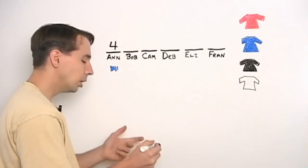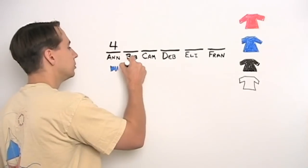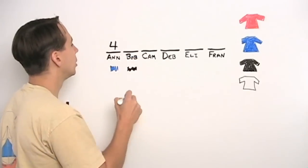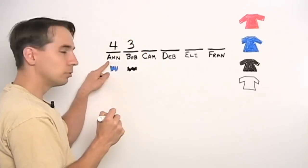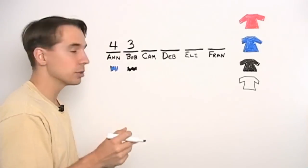So he gets to choose next. Say Bob chooses black. And he had three choices. So for each of Ann's four choices, Bob will have three choices, no matter what.